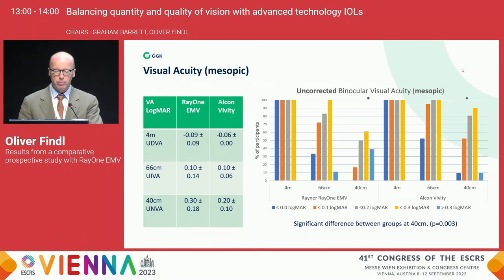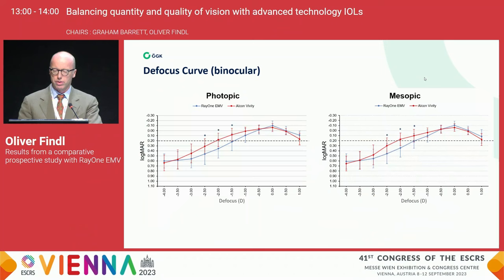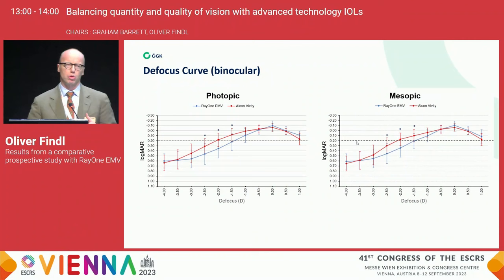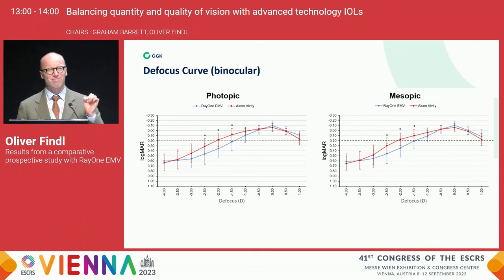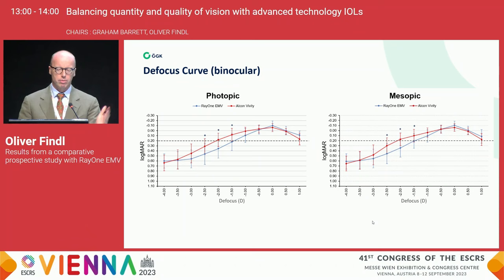We had similar results for mesopic conditions. Looking at the binocular defocus curves — very similar for photopic and mesopic — you can see that the Alcon Vivity has a higher range, especially in that defocus of about one and a half to two and a half diopters. A little worse at distance, as you can see in the details, and that's something we also hear about the Vivity clinically. There are some patients who say for distance it's just not as good as they would expect.